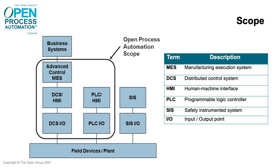The scope of the Open Process Automation Standard is shown here in the box. Notably, outside the box are safety instrumented systems and field devices and plant equipment. Field devices are things like temperature and pressure transmitters or valve positioners.